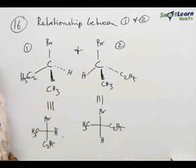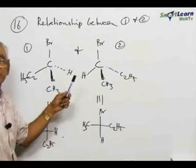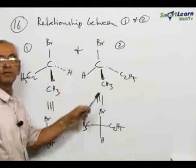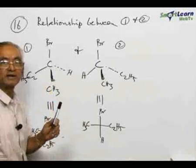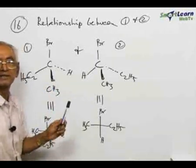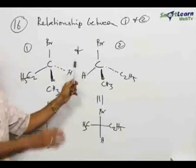Now, two structures are given here. What is the relationship? As we have seen earlier in some questions, what is the relationship between the two? There is only one chiral center. If there is only one chiral center, there can only be two possibilities: they can be two different representations of the same compound, or they can be mirror images.